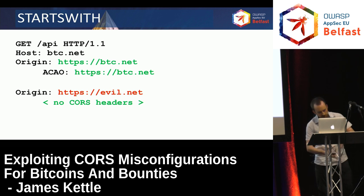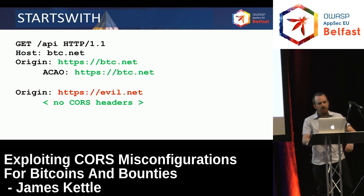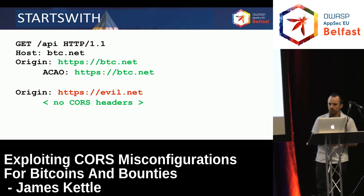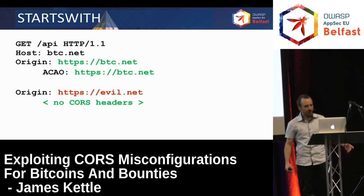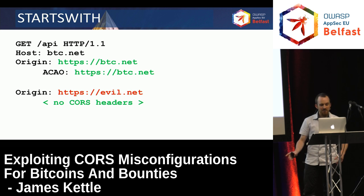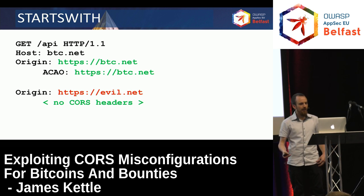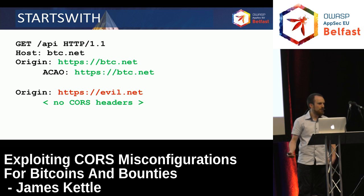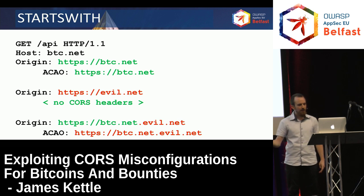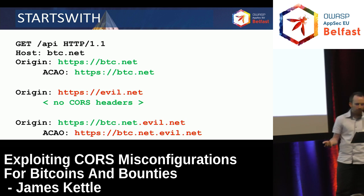Other times, people try to validate the origin header but something goes wrong. Here, this is a different exchange — they're validating that the origin starts with btc.net. I think they think that the origin header might contain a full URL specifying a path and such like, and that's why they're doing this. But of course, that means they trust btc.net.evil.net, which is not great.